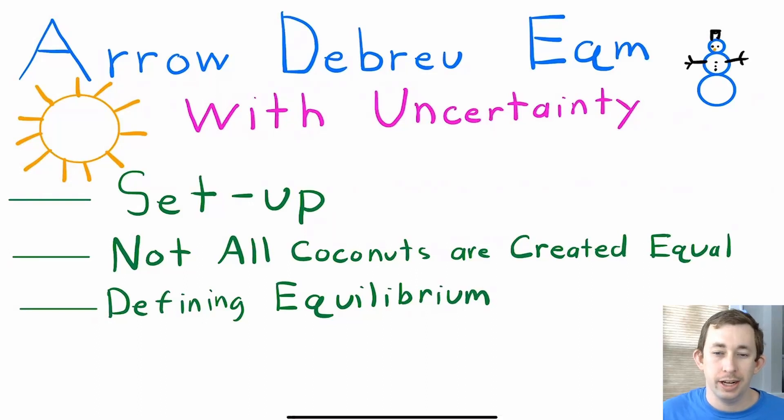Hi guys, welcome back to In Case of Econ Struggles. Today we're talking about the Arrow-Debreu equilibrium again, but now we're entering into an area of uncertainty. Timestamps are below if you'd like to jump around, but let's go ahead and get right into it.